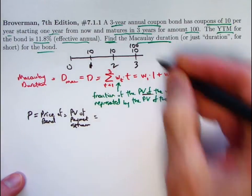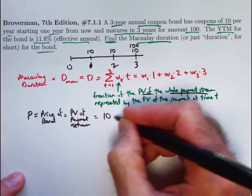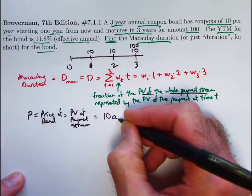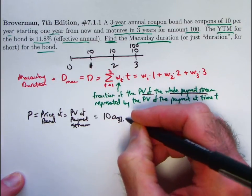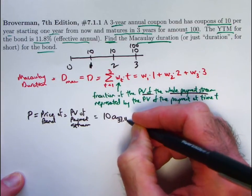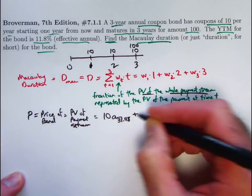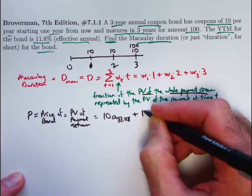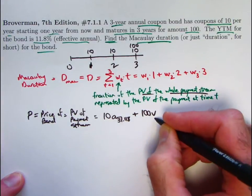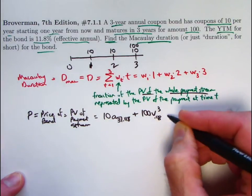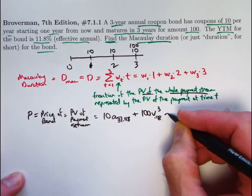Now let's go ahead and review the basic formula for the bond price in calculating this. We have the present value of the coupons. That'll be 10 times the present value of an annuity immediate with payments of one, three payments, and the interest rate, again, is 11.8%. 0.118 goes there. And then we have the present value of the redemption amount. 100 gets discounted back in time by three years. V sub 0.118 to the third power. And let's now go ahead and calculate this.